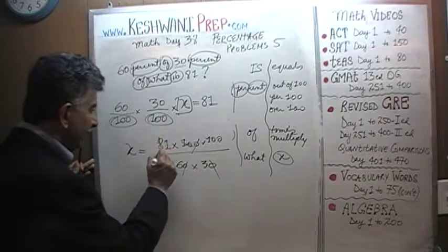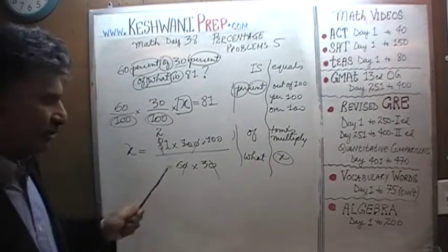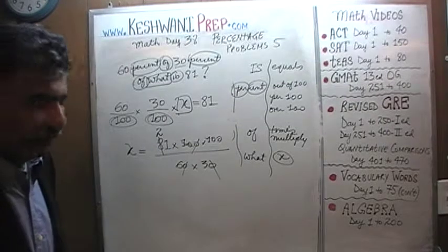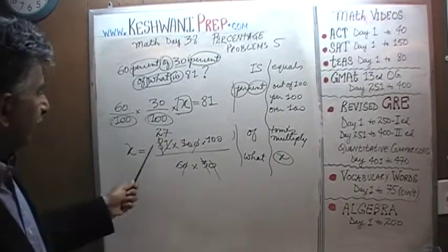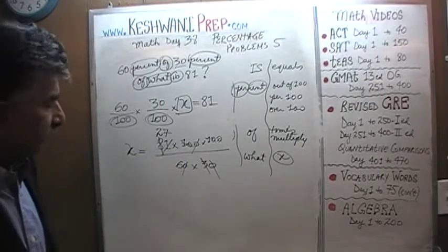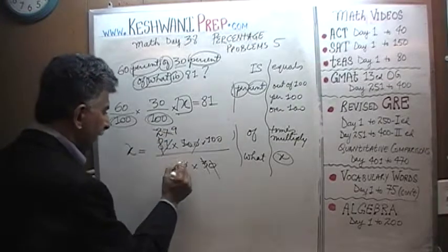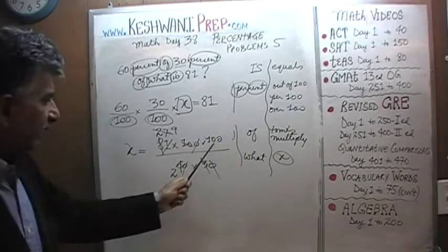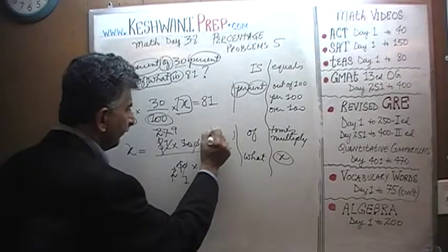81 divided by 3: 8 has two 3s, the remaining 2 joins the 1 to become 21, and 21 has seven 3s — so 81 ÷ 3 = 27. We can divide by 3 one more time because 2 plus 7 is 9 and 9 is divisible by 3. 27 ÷ 3 = 9, and 6 becomes 2. Then divide top and bottom by 2 — the 2 cancels and 100 becomes 50.